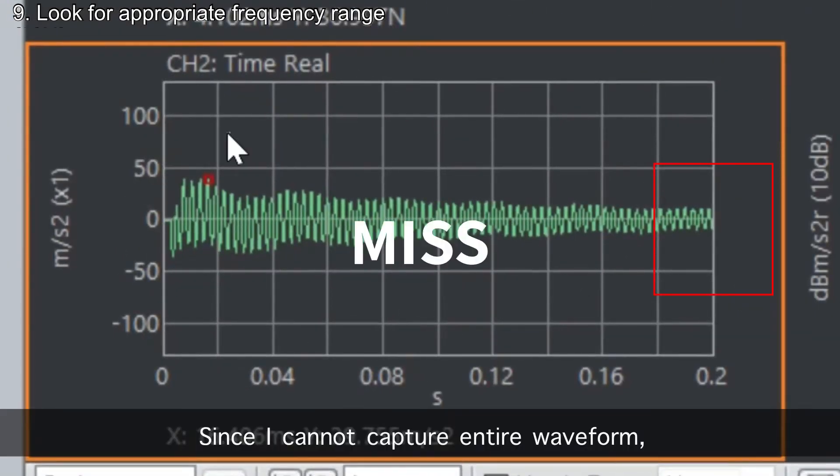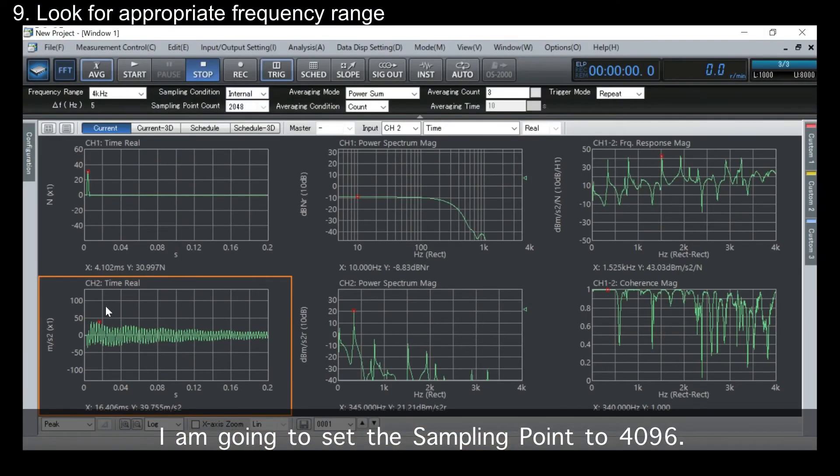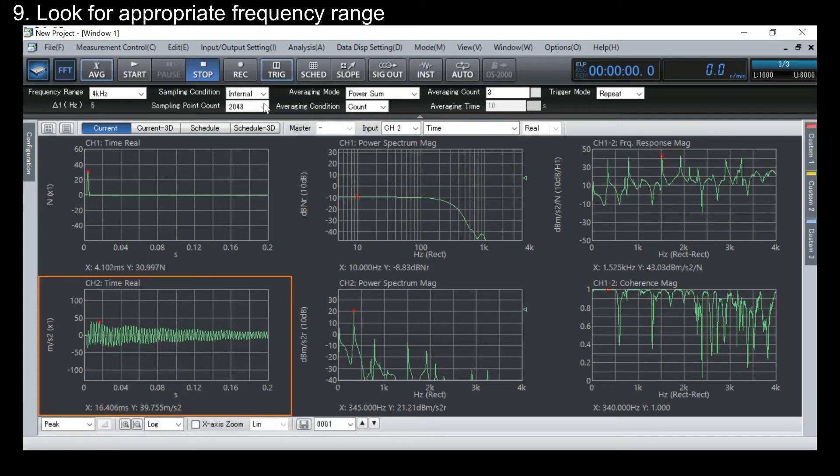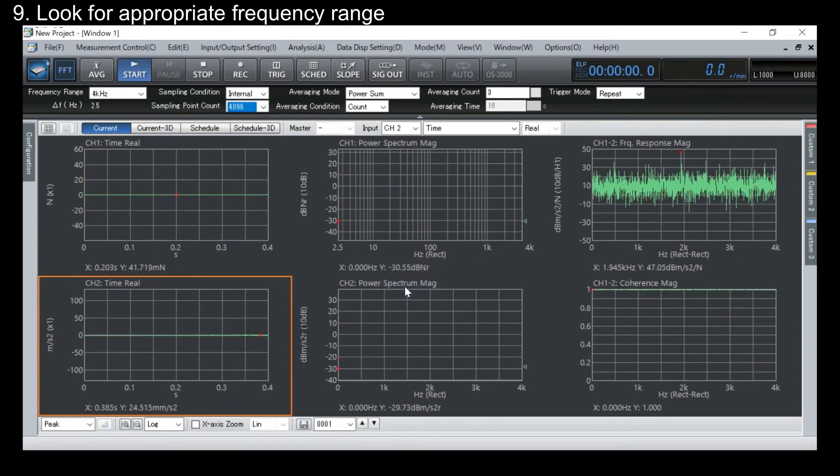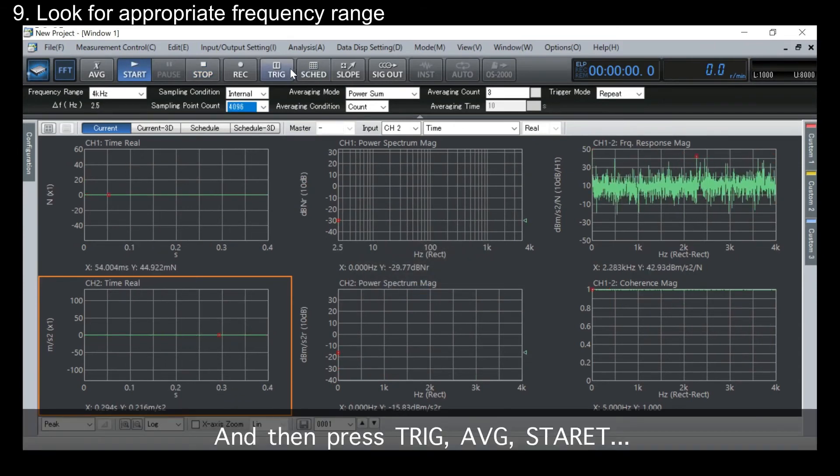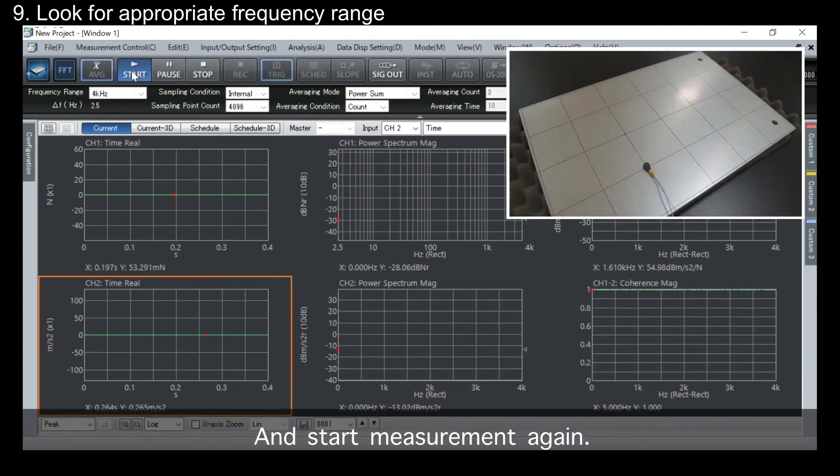Since I cannot capture entire waveform here, I'm gonna set the sampling point to 4096. And then, press this button, this button, this button, and start measurement again.